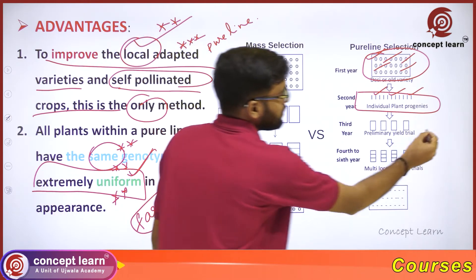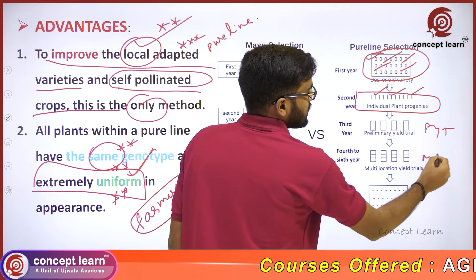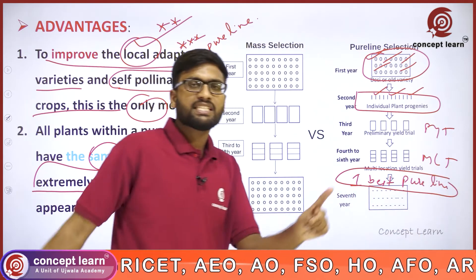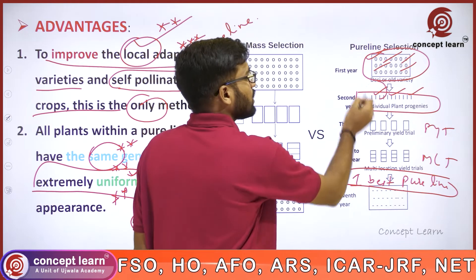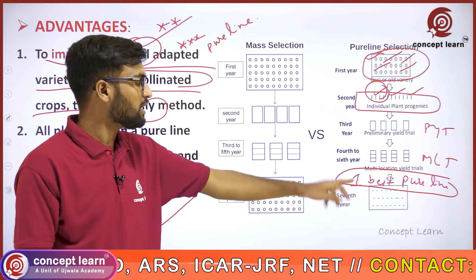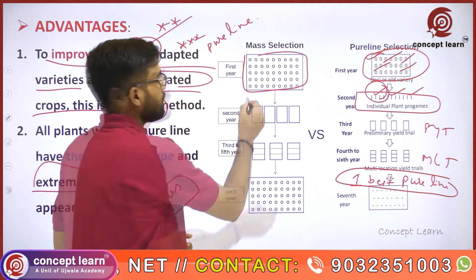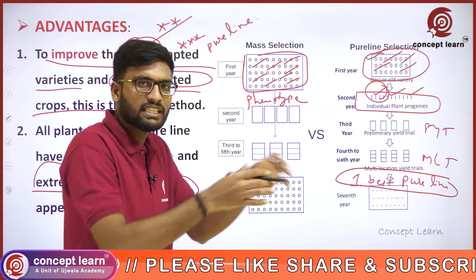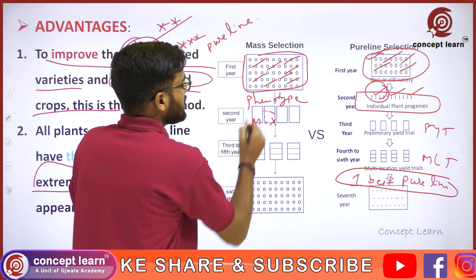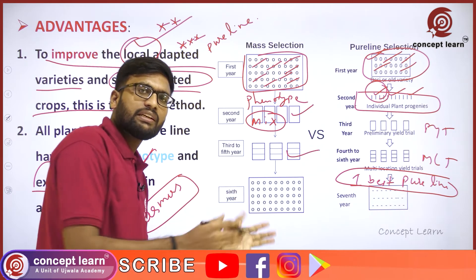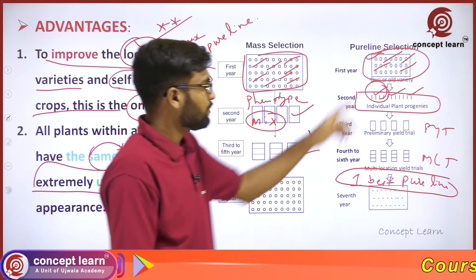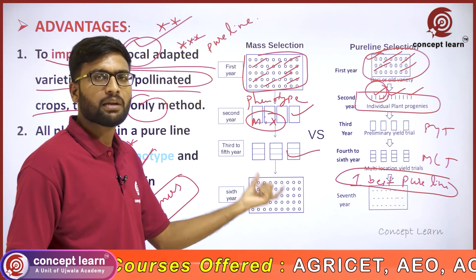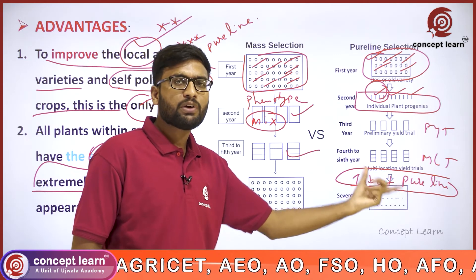One best pure line is released as a variety. In mass selection, a mixture is released, but in pure line selection, a single best pure line is released as a variety. This is the main difference. Mass selection gives a mixture with adaptability variation; pure line selection gives uniformity from a single plant.